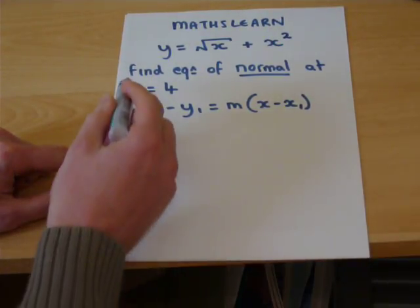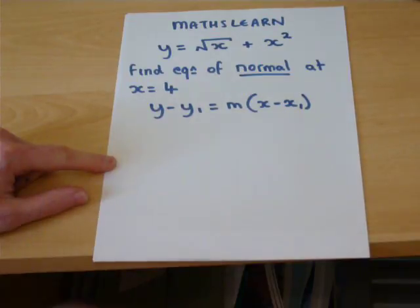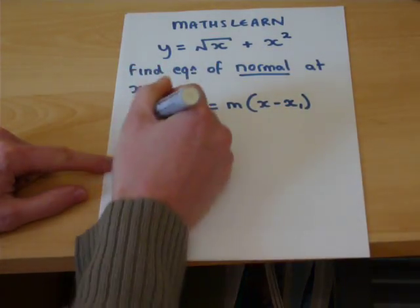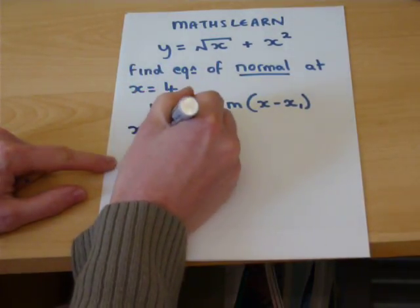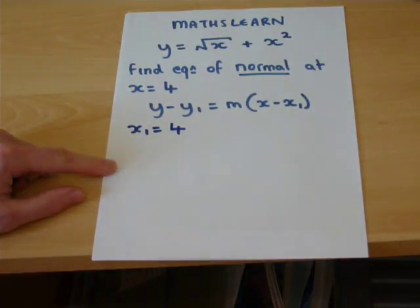Now, we're told we want the normal when x is 4, so we know that x1 must equal 4, but we also must find the corresponding y coordinate at x equals 4.